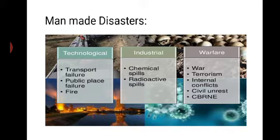Tamil Nadu, Andhra Pradesh, Orissa, West Bengal and Pondicherry on the East Coast, and Gujarat on the West Coast are more prone to cyclones. Cyclones occur in the months of May, June and October–November, with primary peaks in November and secondary peaks in May. 68% of cultivated area is vulnerable to drought — 33% is chronically drought-prone, receiving rainfall less than 750 mm per annum, and 35% of drought-prone area receives rainfall between 750 to 1,125 mm per annum.